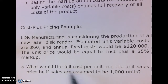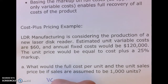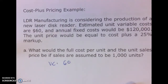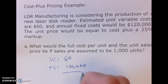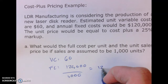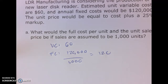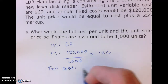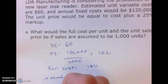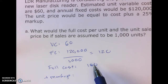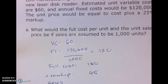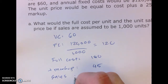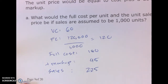Let's calculate full cost. Variable cost per unit is $60. Fixed cost per unit is $120,000 divided by 1,000 units, which gives us $120. Adding those together gives a full cost of $180. Our markup is 25%, so $180 times 0.25 equals $45. Therefore, our sales price is $180 plus $45, which equals $225.